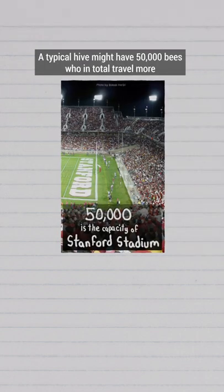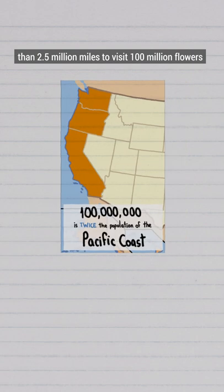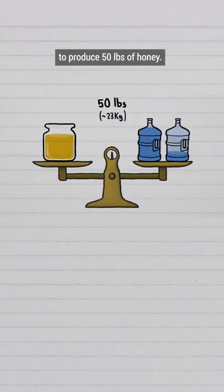A typical hive might have 50,000 bees, who in total travel more than 2.5 million miles to visit 100 million flowers to produce 50 pounds of honey.